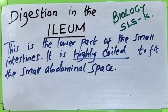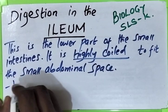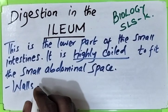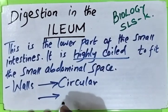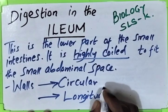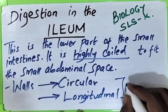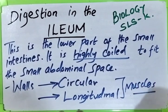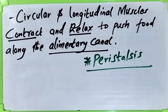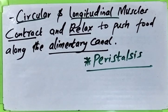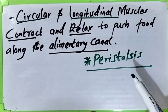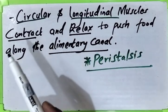The walls of the ileum have two muscles: circular and longitudinal muscles. These muscles will contract and relax to push food along the alimentary canal. So the process of peristalsis is continued by the contraction and relaxation of the circular and longitudinal muscles.